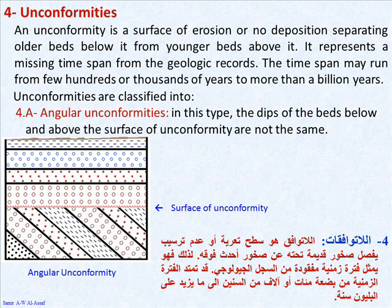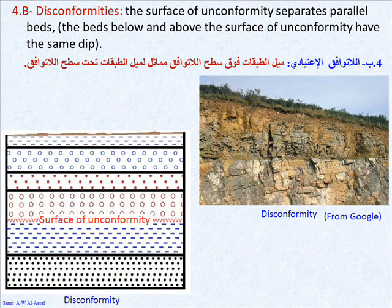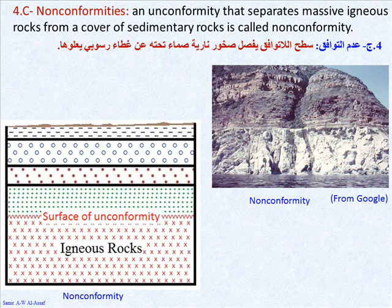Unconformities are classified into: 4A, angular unconformities — the dips of the beds below and above the surface of unconformity are not the same. 4B, disconformities — the surface of unconformity separates parallel beds, meaning the beds below and above have the same dip. 4C, nonconformity — an unconformity that separates massive igneous rocks from a cover of sedimentary rocks.